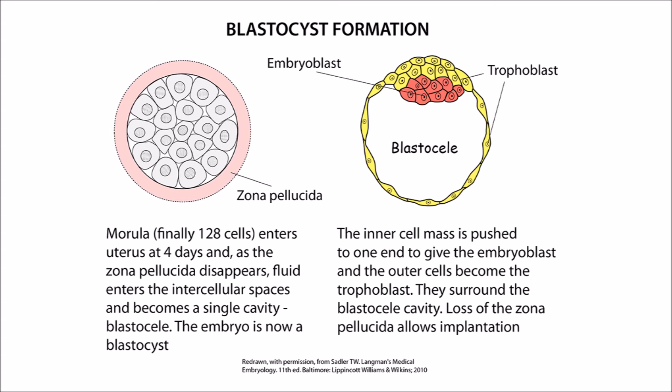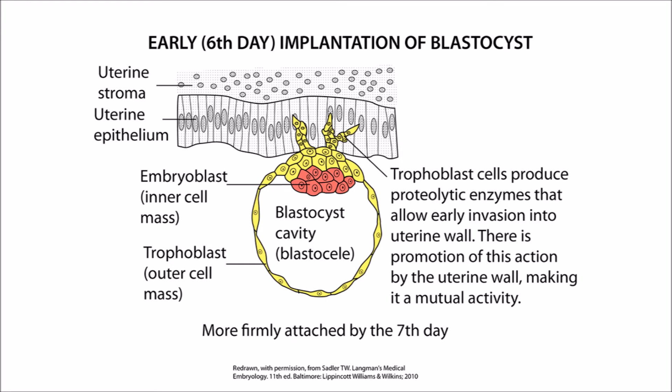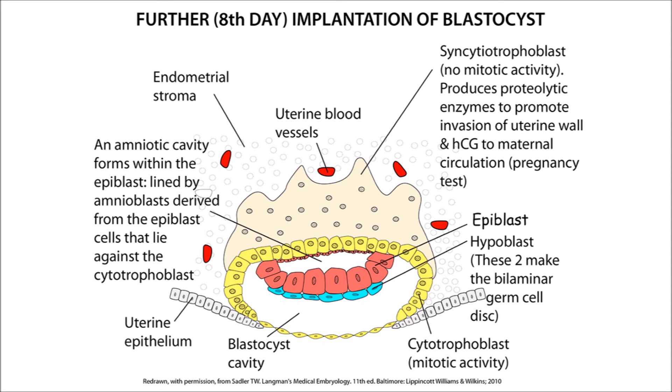The blastocyst is orientated in such a way that it is the inner cell mass which meets the uterine wall, and we now begin to get early implantation of this blastocyst around about the sixth day. The trophoblastic cells, which are on the outside of the blastocyst, are the first to touch the uterine epithelium. These trophoblastic cells produce a proteolytic enzyme that allows early invasion into the uterine wall, but the uterine wall itself is receptive to this and promotes this attachment as a mutual activity. The trophoblastic cells begin to invade the uterine wall.